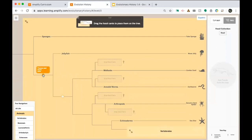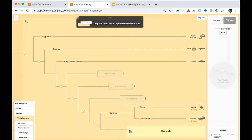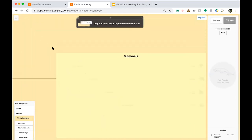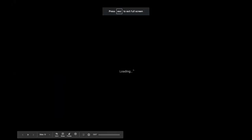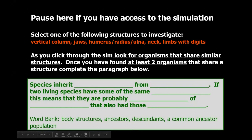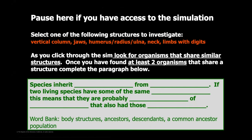Make sure you're working in the Tree Map part of the model and clicking on the little eye icons to see shared structures as you go down the tree — it continues to expand. If working independently at home, pause here, pick a couple of structures, find which species have them, and complete the paragraph. When done, fast forward to the blue slide where we rejoin as a group.